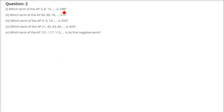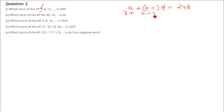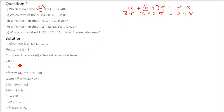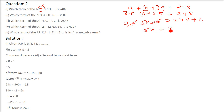Which term of the AP is 248? Here A and D are both given. A is 3 and D is 8 minus 3, that is 5. We set A plus N minus 1 into D equal to 248. So 3 plus 5N minus 5 equals 248. This gives 3 minus 5 equals minus 2, so 5N equals 250, and N equals 50. So the 50th term is 248.